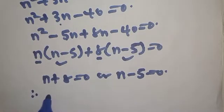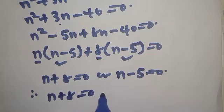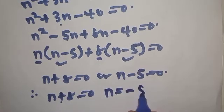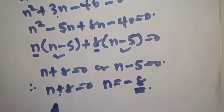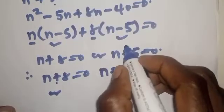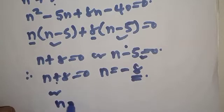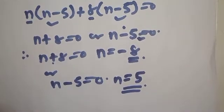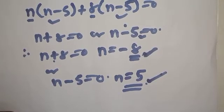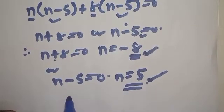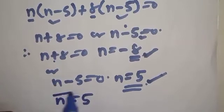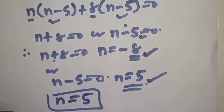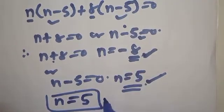Therefore n plus 8 equals 0, giving n equals negative 8, or n minus 5 equals 0, giving n equals 5. Our final answer: since n cannot take a negative value — no number base can be negative — therefore n is equal to 5.